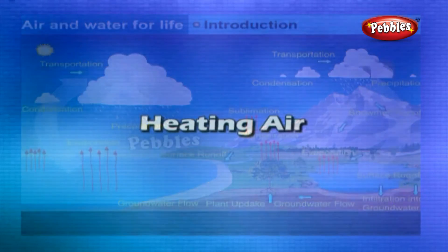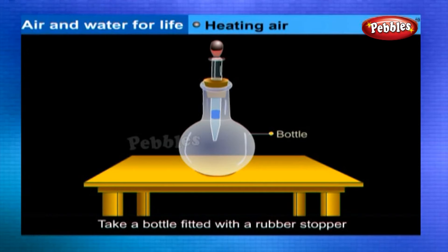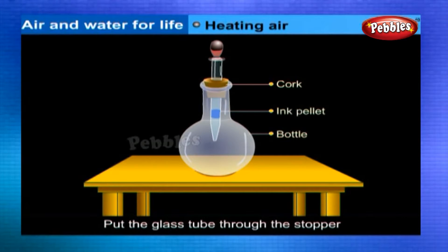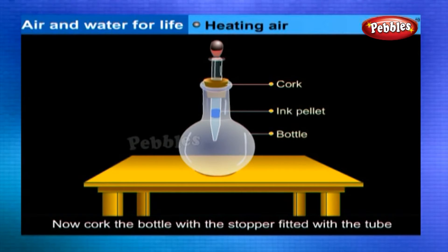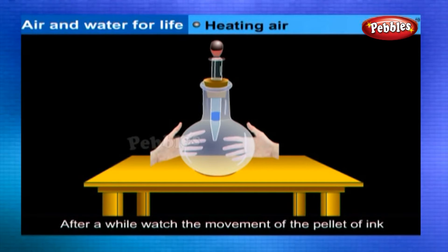Heating air experiment: Take a bottle fitted with a rubber stopper. Make a hole in the stopper so that a glass tube just fits into it. Put the glass tube through the stopper and trap a pellet of ink or colored water in the glass tube. Now cork the bottle with the stopper fitted with the tube and hold the bottle with both hands.